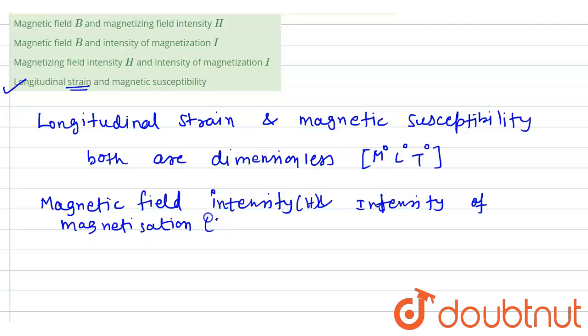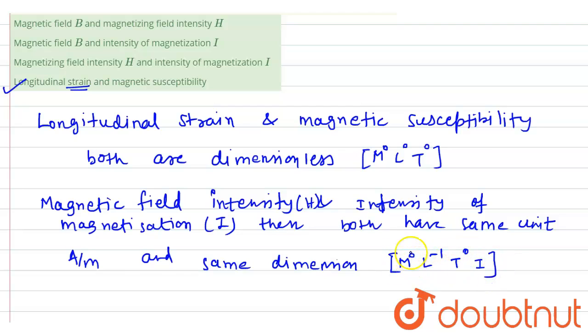Then both have the same unit, ampere per meter, and same dimension, which is M^0 L^-1 T^0 I. So this is the dimension of magnetic field intensity and intensity of magnetization which have same dimension also. So these two have same dimension. So this is the answer.